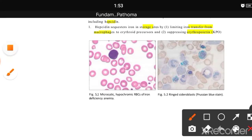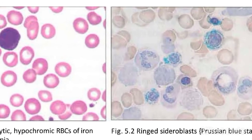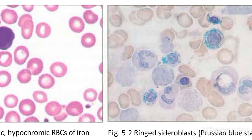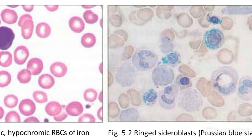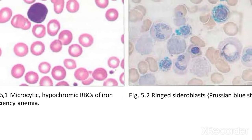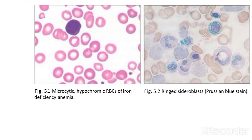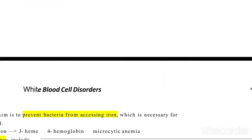This is the figure of ring sideroblasts stained with Prussian blue stain, which highlights the iron deposits forming a ring around the nucleus of the erythroblast.